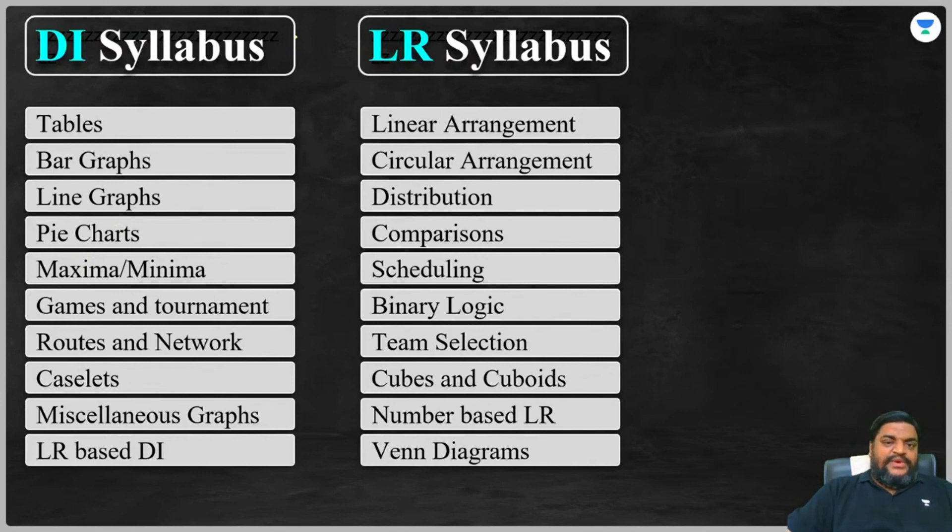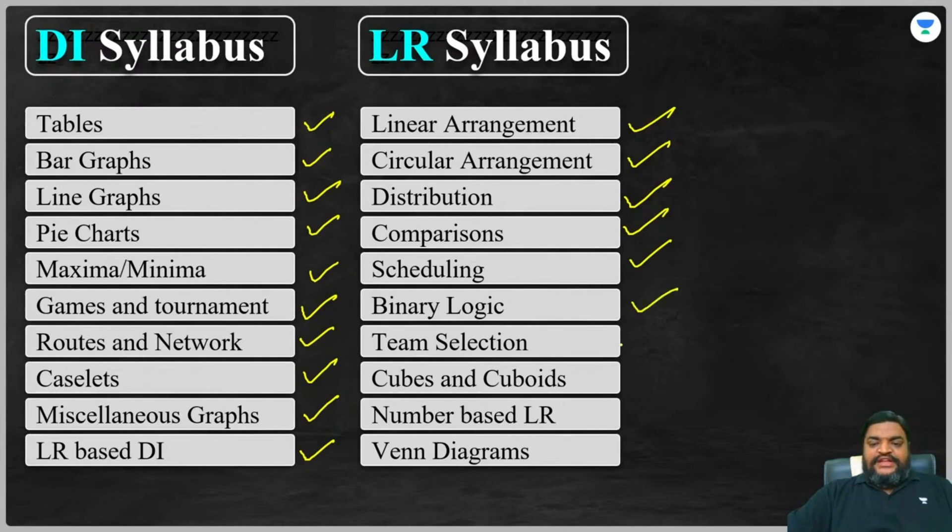I have mentioned separate topics. DI: you can follow tables, bar graphs, line graphs, pie chart, maximum-minimum, games and tournaments, routes and networks, case lists, miscellaneous graphs and LR-based DI. LR: you can start with linear arrangement, circular arrangement, distributions, comparisons, scheduling, binary logic, team selection, cubes and cuboids, number-based LR, Venn diagram.